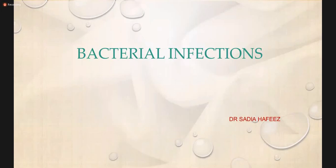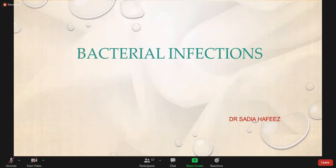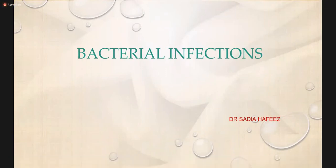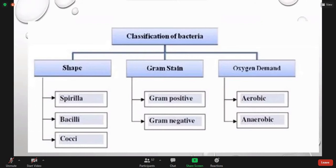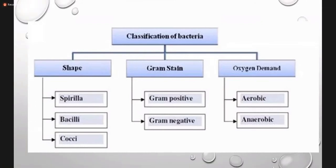Assalamu alaikum. My name is Dr. Sadia. Today I am going to discuss about bacterial infections. Bacteria are broadly classified according to shape: spiral, bacillus, and cocci; according to staining: gram positive and gram negative; and by oxygen demand: aerobic and anaerobic.